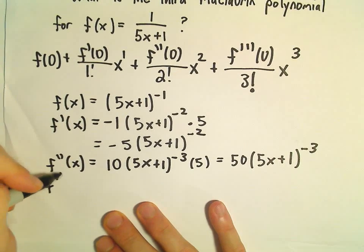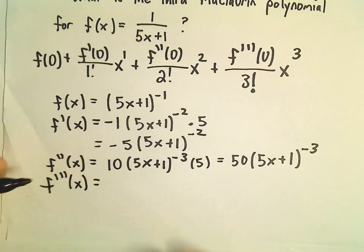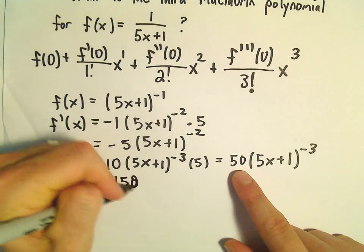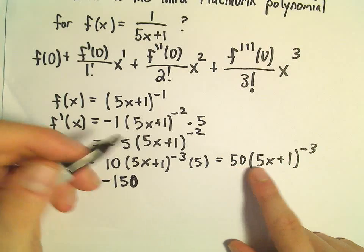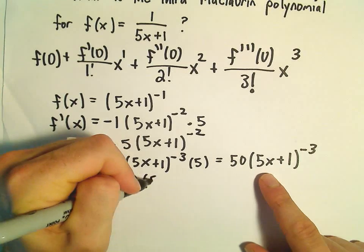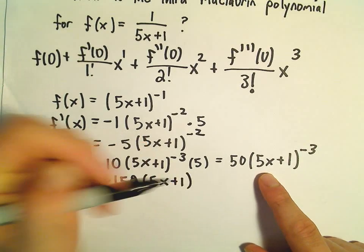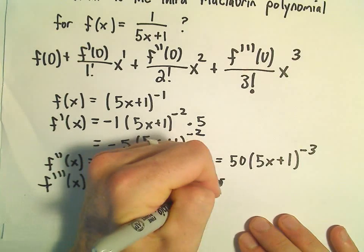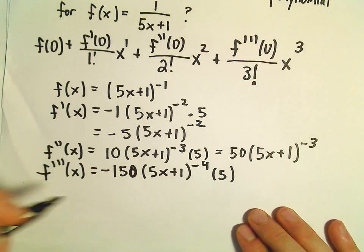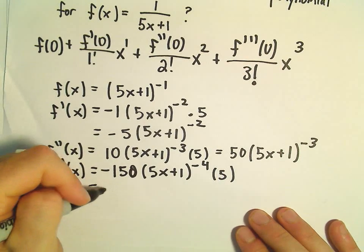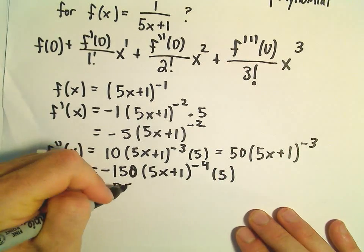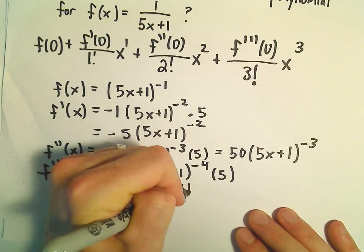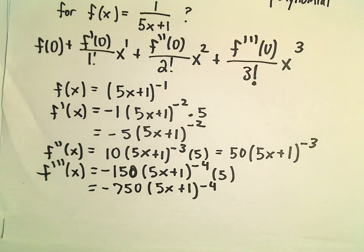For f triple prime of x, we'll get negative 150 when we do negative 3 times 50, giving (5x+1) to the negative fourth. And then we'll multiply by yet another 5, giving us negative 750 times (5x+1) to the negative fourth power.